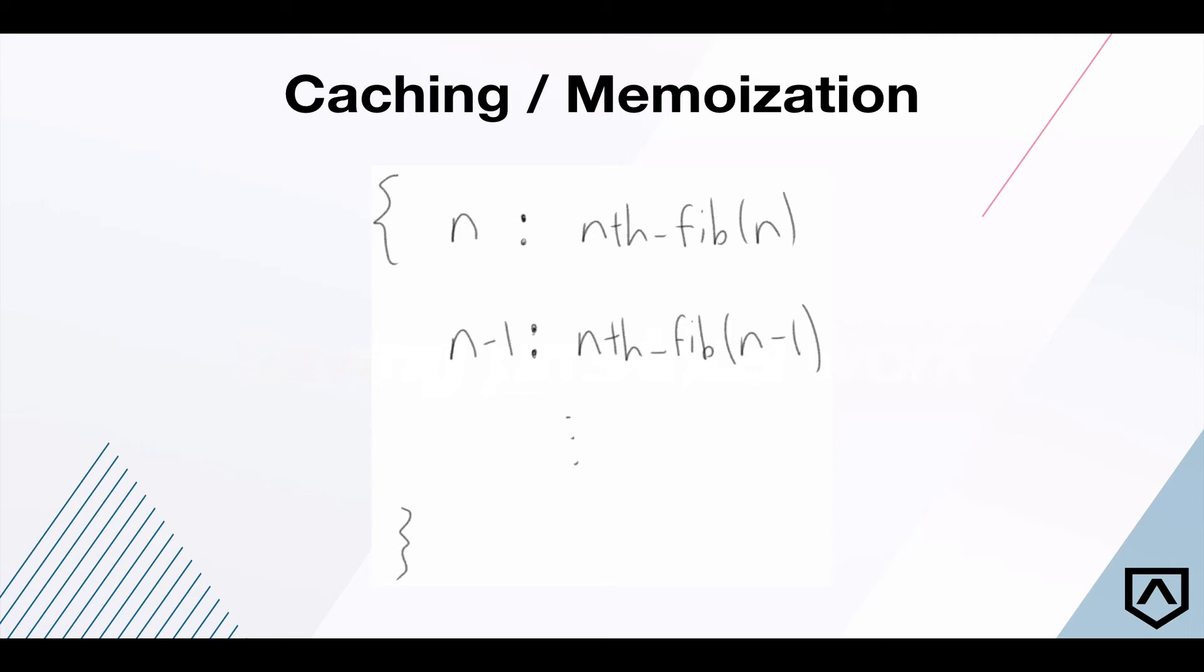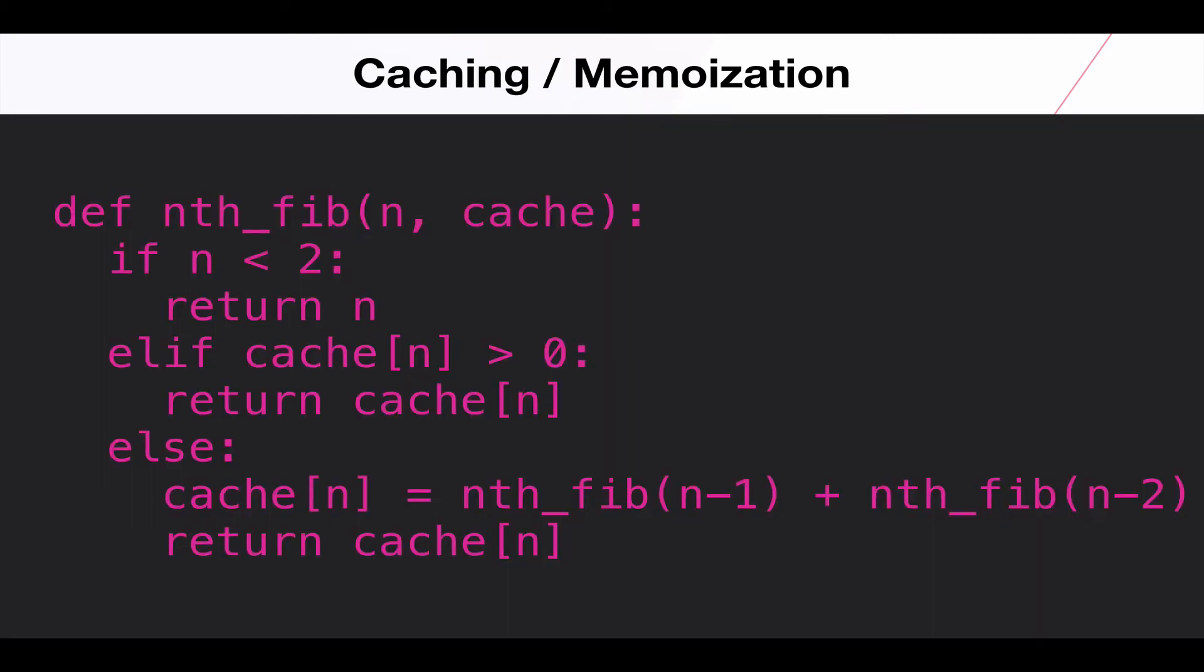As far as what caching might look like, we have a number of ways we could actually implement it. Most straightforward would probably just be using a hash table. In this case the n's, the input n's, can be the keys in our hash table and then the values can just be the answer that is calculated for that particular input n. We might use a hash table or arrays would work just fine as well actually.